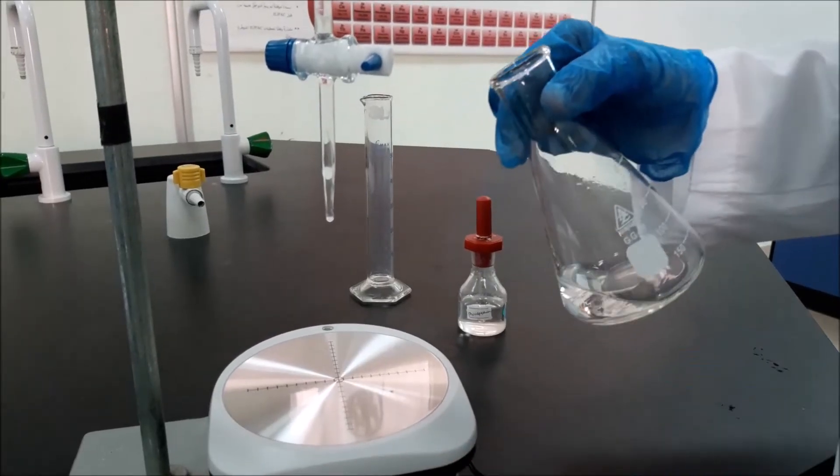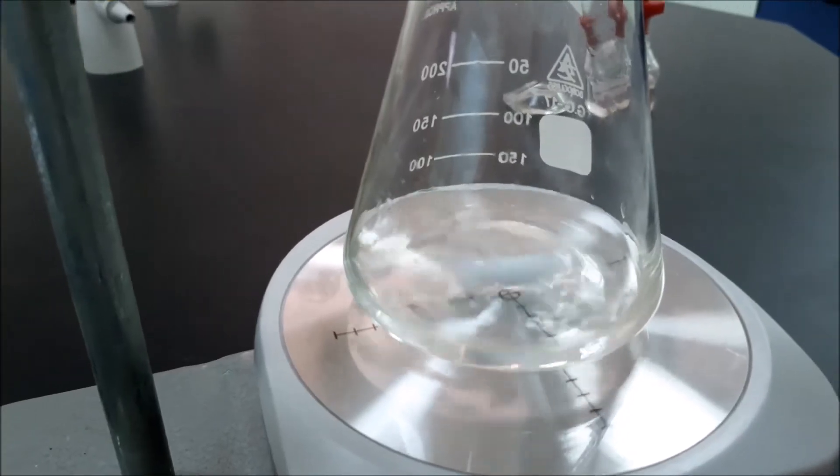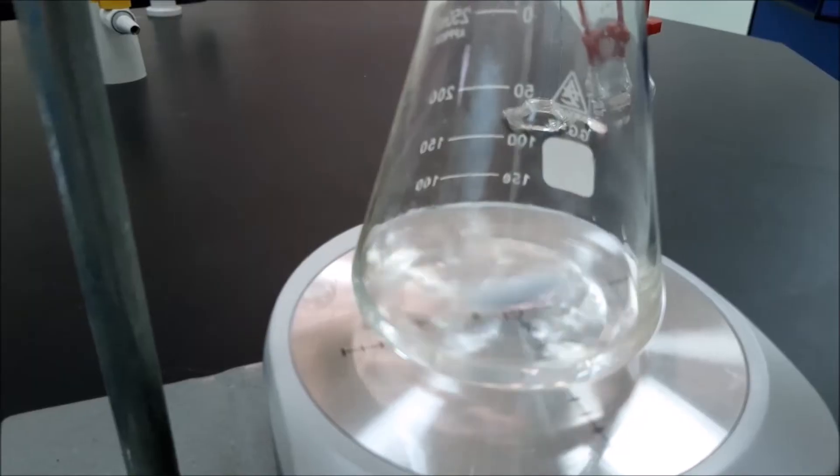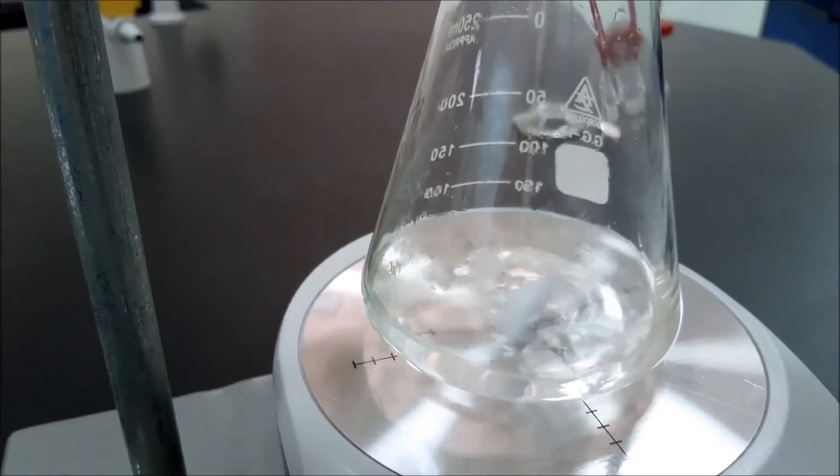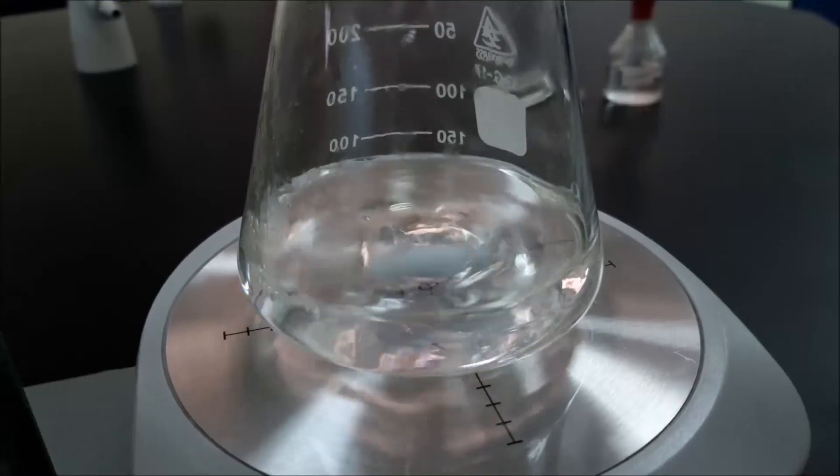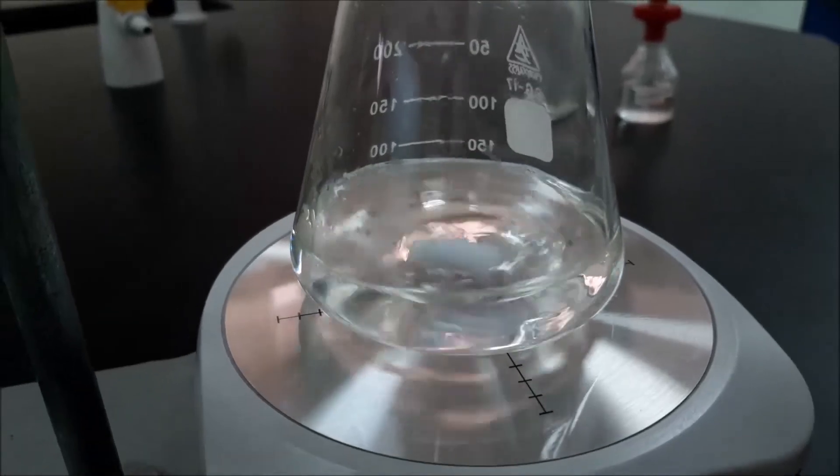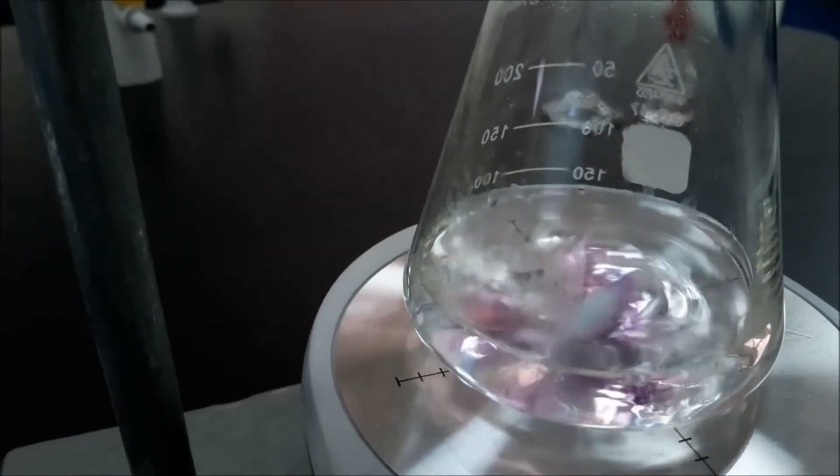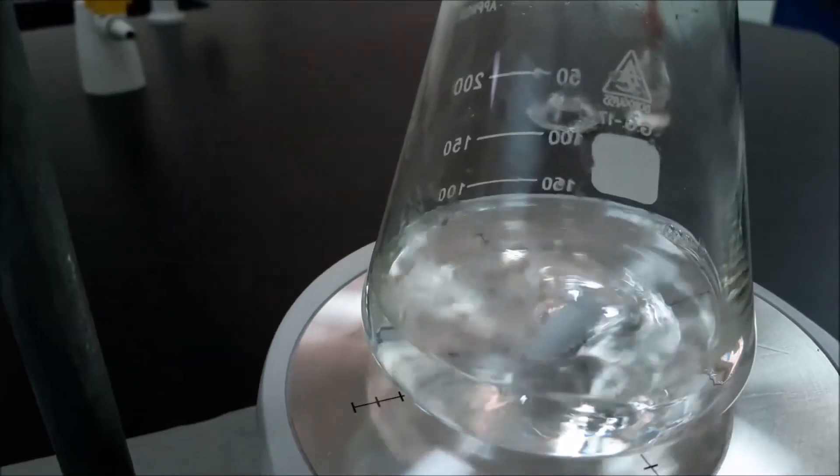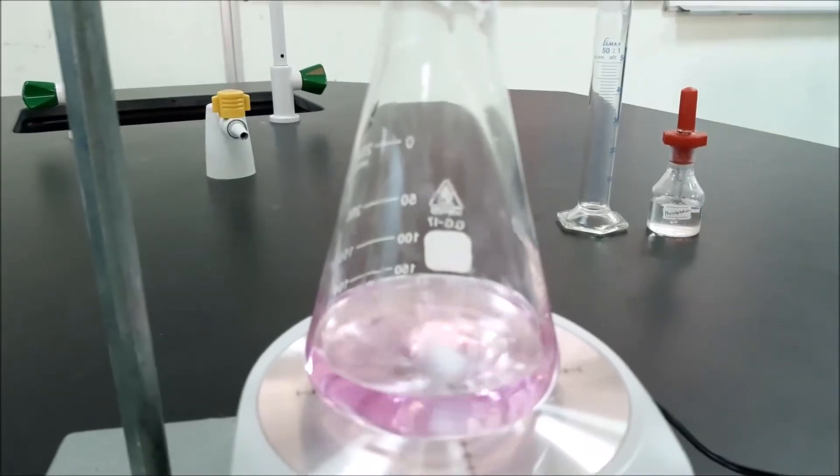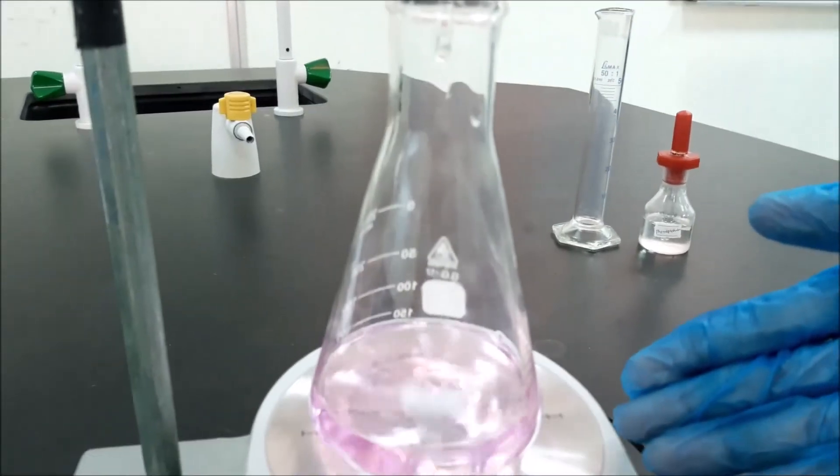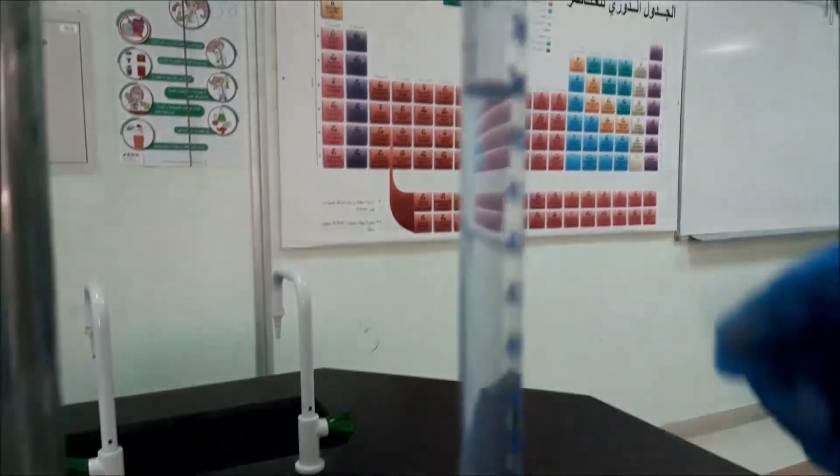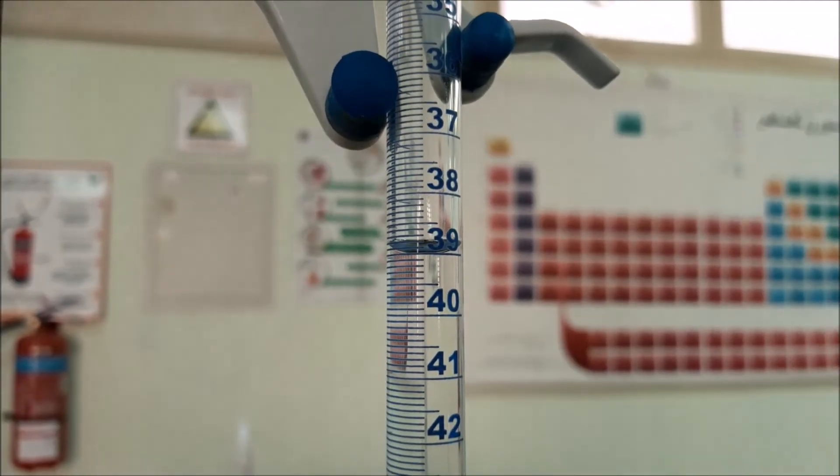And start the experiment. We will turn on the stirrer and drop the NaOH until it changes color. Now, it changes color. The final reading of the burette is 39 ml.